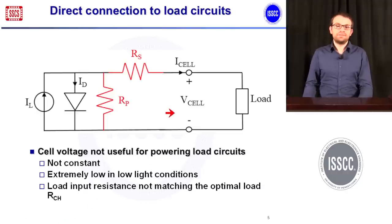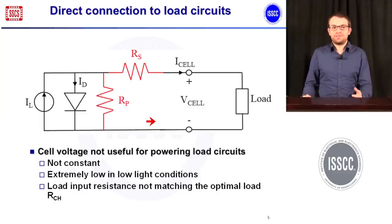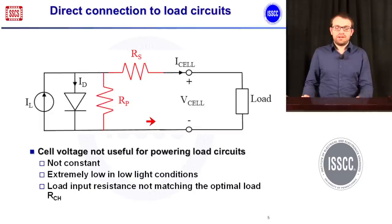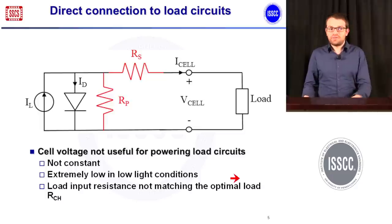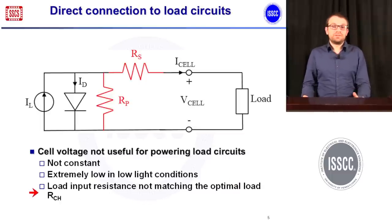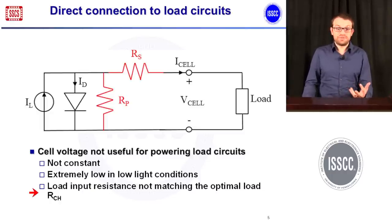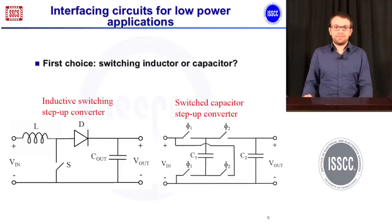What happens if we do the simplest thing and connect a load circuit directly to a solar cell? From this simple circuit you can see that the voltage across the load will be non-constant because the illumination level will change — there may be moments of shadow — so you will not have a regulated output voltage. Also, when there is shadow and very low light conditions, the load will not work. Finally, you have problems of matching with the load resistance, because the load resistance will in general not be equal to RCH, which is the optimal resistance the solar cell wants to see.